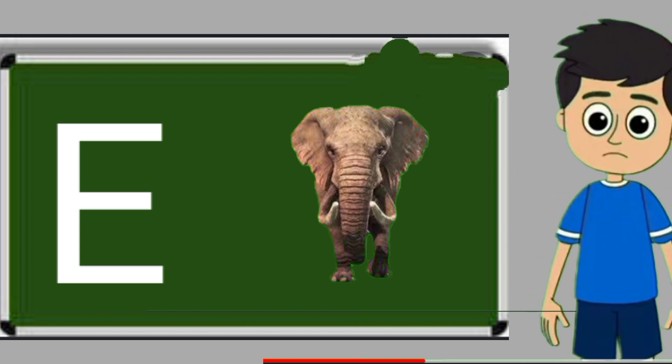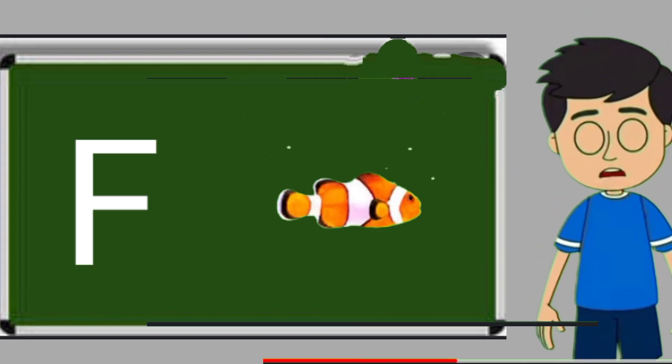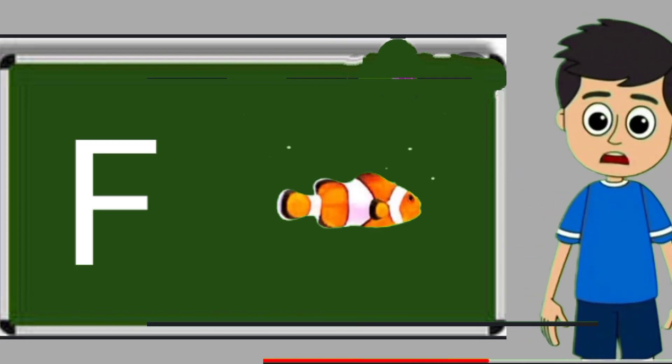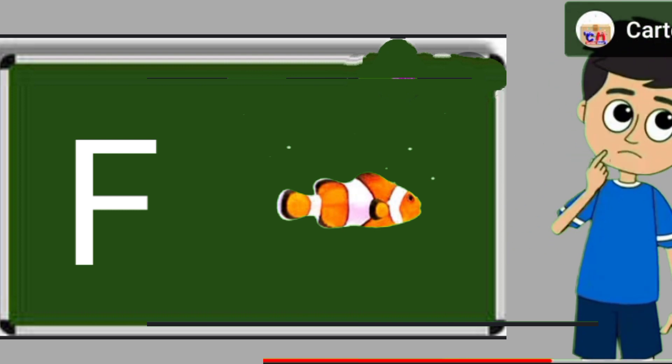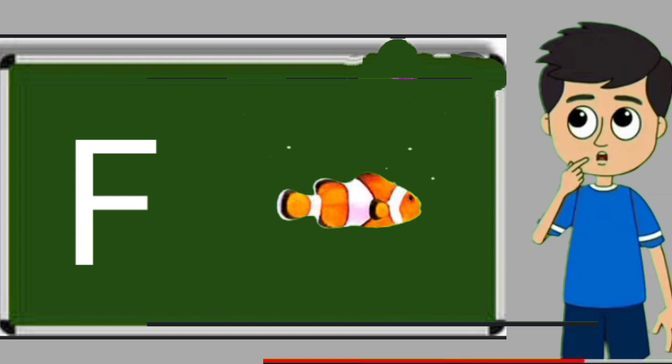E for elephant. Elephant means hathi. F for fish. Fish means machli.